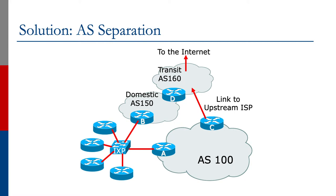The domestic network, which peers at the exchange point, clearly belongs in a separate autonomous system from the transit part of the infrastructure. So what the operator needs to do is separate the infrastructure into domestic and transit, as the diagram shows. AS150 is the domestic network where all the access and content is hosted, and AS160 is the transit part of the network which sells transit to other network operators in the area.